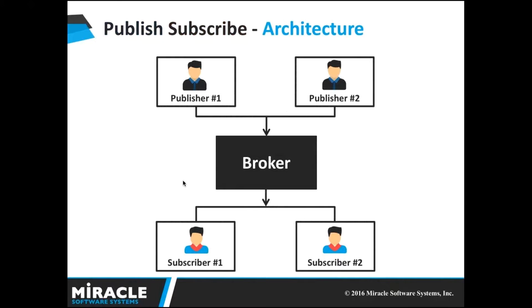Here is a small description in pictorial representation. We can see two publishers, one and two. They can publish topics individually into the broker. Subscriber one can subscribe to both publishers and may subscribe for particular publications they are interested in.